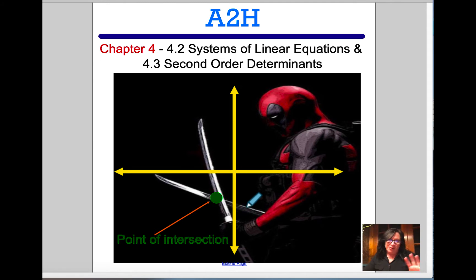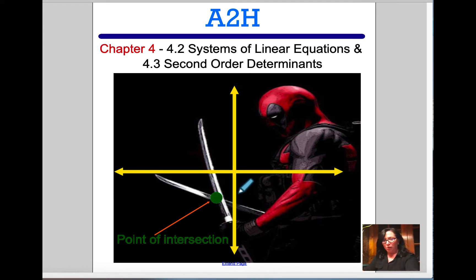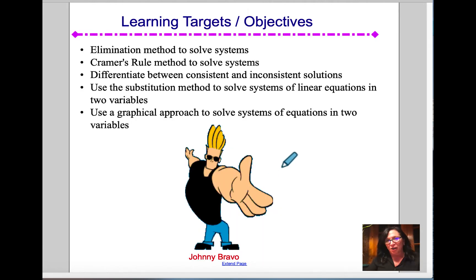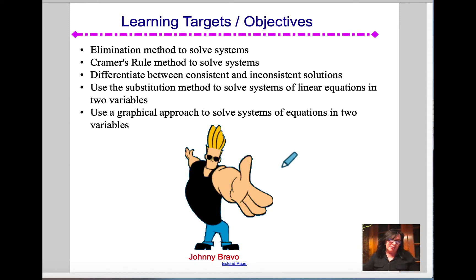I want to start off with one of my favorite Marvel characters who is illustrating a point of intersection. Our learning targets today, our objectives, are basically to learn and review the graphing method, the elimination method, Kramer's rule which is determinants, and also to differentiate between consistent and inconsistent graphs, and then what gives a solution and what is not a solution.